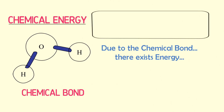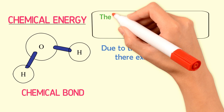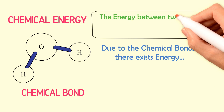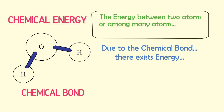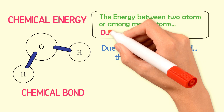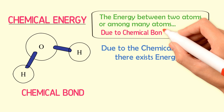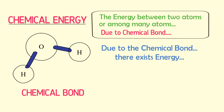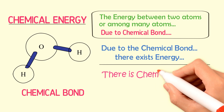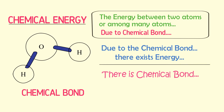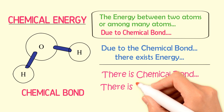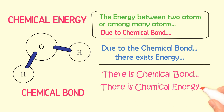In physics or in chemistry, we call this energy between the hydrogen atom and the oxygen atom due to a chemical bond as chemical energy. Hence, chemical energy is the energy between two atoms or among many atoms due to a chemical bond. Simply remember that when there is a chemical bond or chemical bonds among atoms, there exists chemical energy.